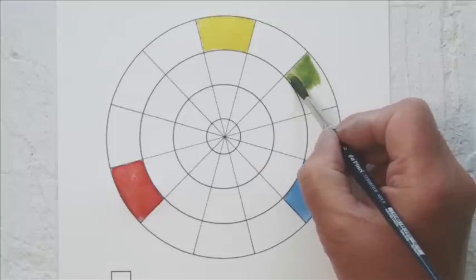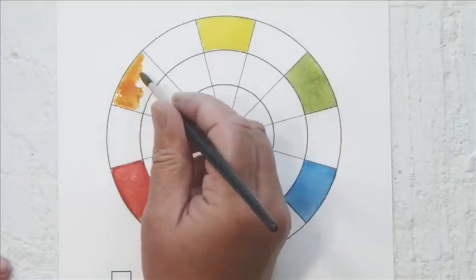Then mix the red and yellow to make orange and place it centrally between red and yellow.